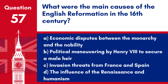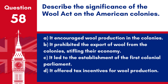Question 57. What were the main causes of the English Reformation in the 16th century? a. Economic disputes between the monarchy and the nobility. b. Political manoeuvring by Henry VIII to secure a male heir. c. Invasion threats from France and Spain. d. The influence of the Renaissance and humanism. Answer: b. The English Reformation was primarily caused by King Henry VIII's desire to annul his marriage to Catherine of Aragon, in order to marry Anne Boleyn and secure a male heir, leading to England's break with the Roman Catholic Church.